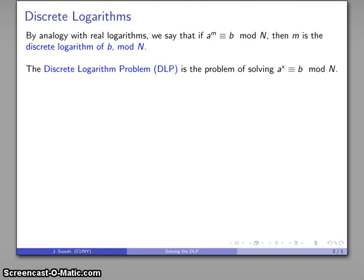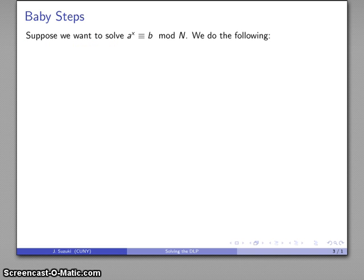The discrete logarithm problem is trying to find that value. One standard method of solving it uses what's called the baby step, giant step. This is based on the following principle. Suppose I want to solve this discrete logarithm problem. What I'm going to do is come up with two sets of numbers and look for a number that appears in both sets. This is an example of what's called a collision algorithm. They are very efficient algorithms for solving certain types of problems.